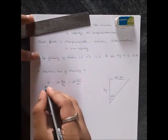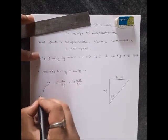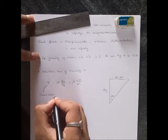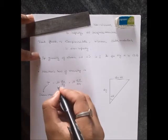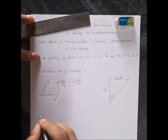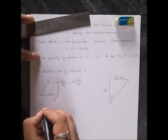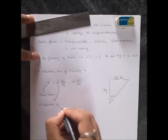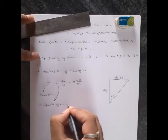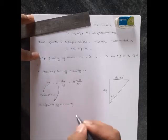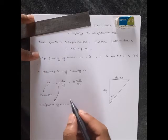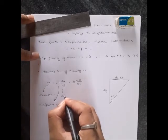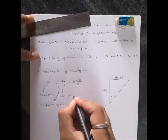Where tau is the shear stress, and mu is the coefficient of viscosity. du/dy is the velocity gradient.